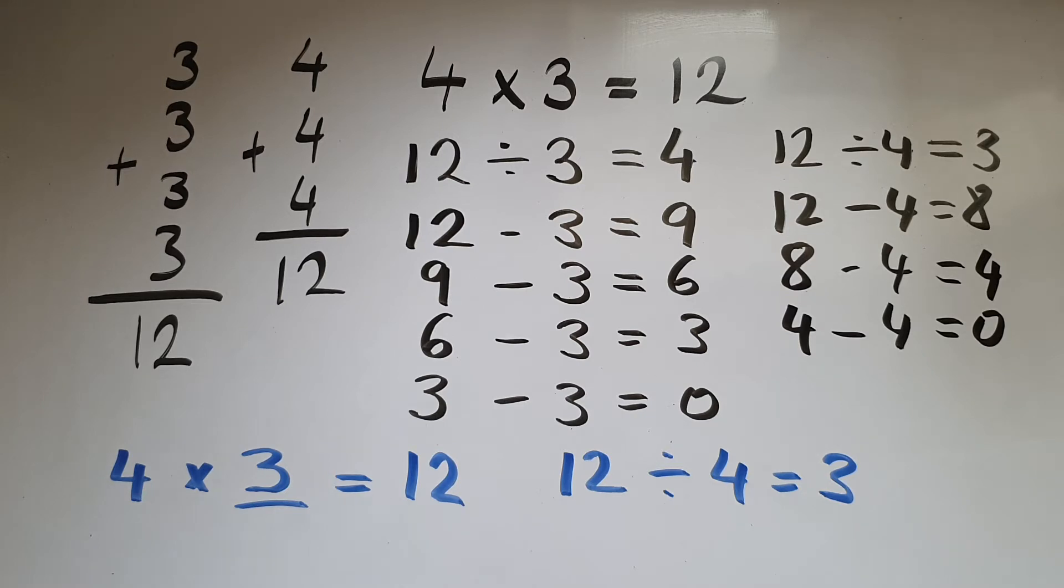If I do 15 divided by a number equals 3, so that is the same as 3 times that number equals 15.